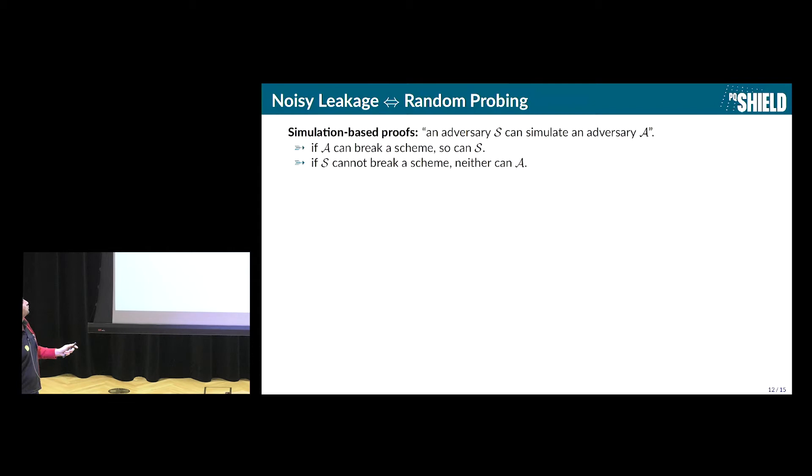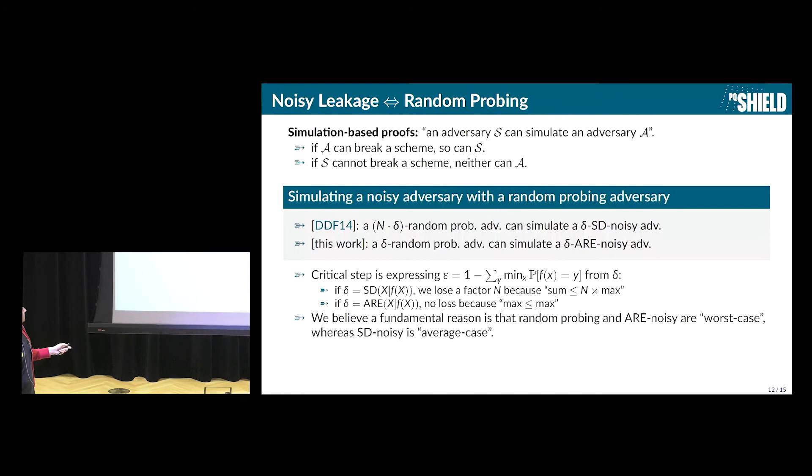Another thing that we did is doing a reduction between the noisy leakage and the random probing. And compared to the state of the art, we got a much better proof in the sense that we gained a factor n, where n is the size of the support of X. We gained a factor n compared to the previous proofs. And a conceptual explanation for this is that simply since we took the max instead of the expected value, then at some point we got to express epsilon equal to 1 minus the sum of the minimum of some probabilities. And so if we expect the statistical distance, we lose the factor n because we have to say that the sum of n elements is less than n times the max of these elements. And on the other hand, if we use ARE, then you have good knowledge because the max is equal to the max and then we don't lose anything.